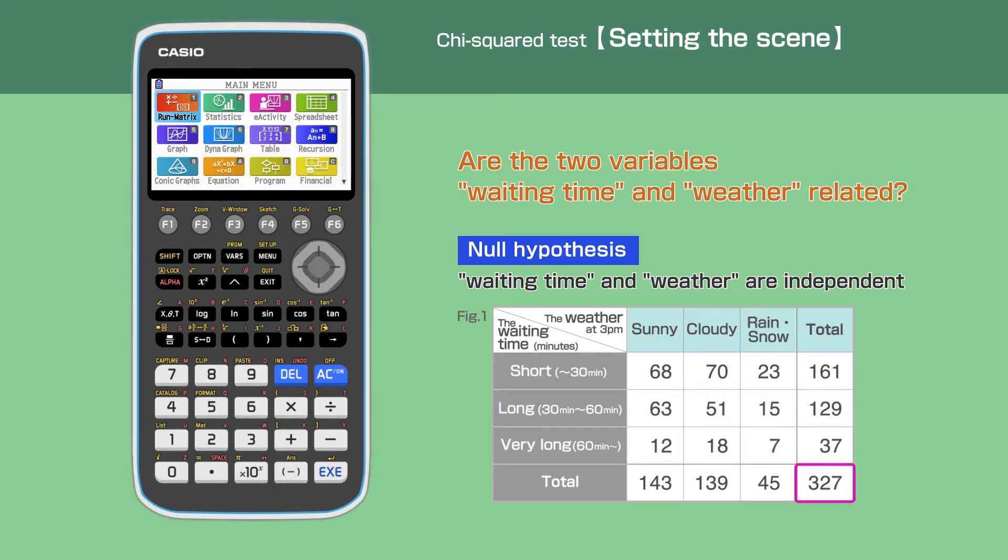There are 327 days of data, excluding maintenance days. The organized data is shown in a table. Our null hypothesis is that waiting time and weather are independent.